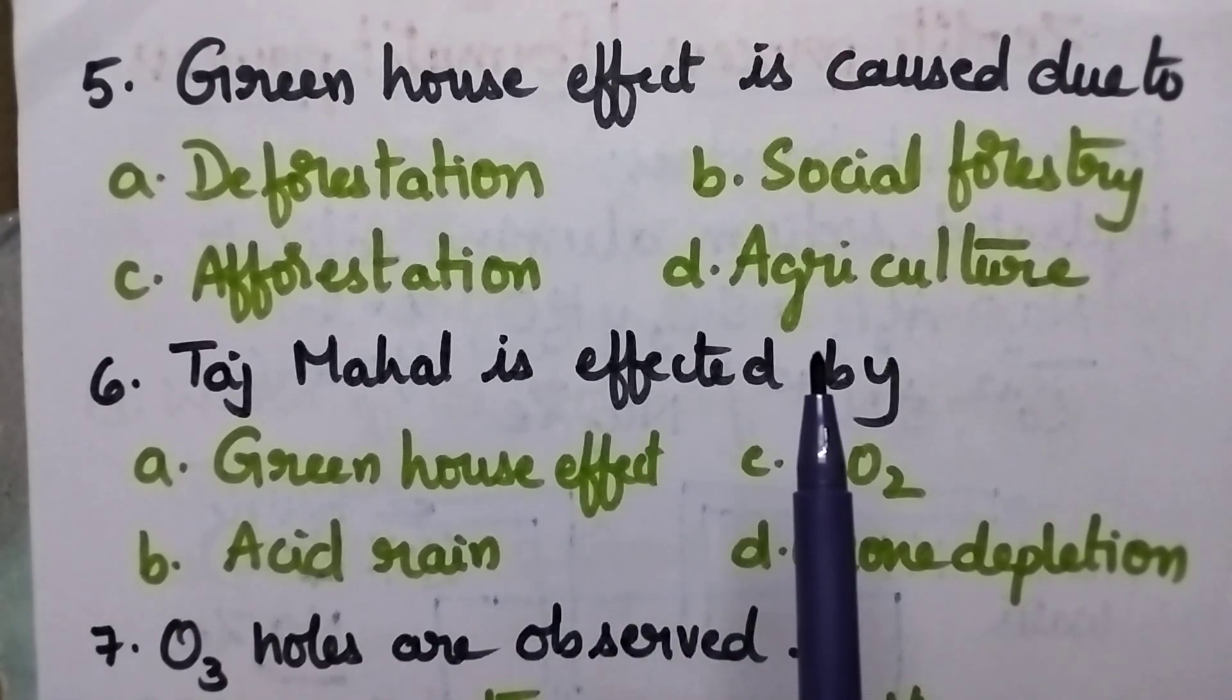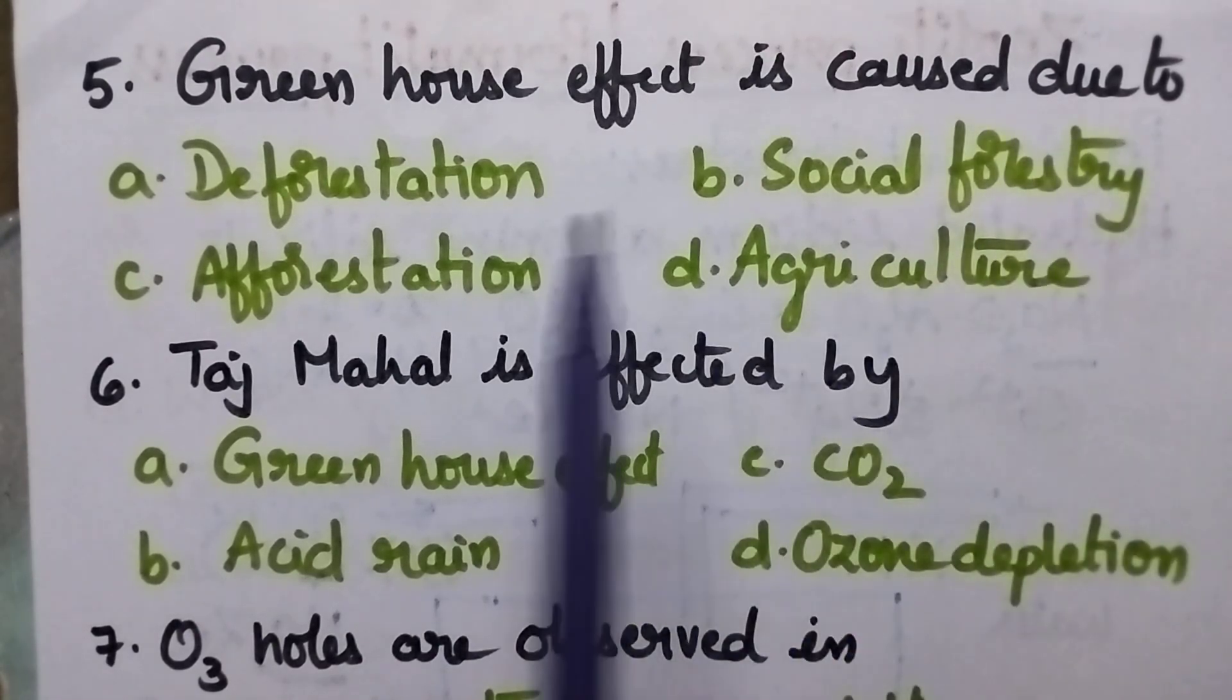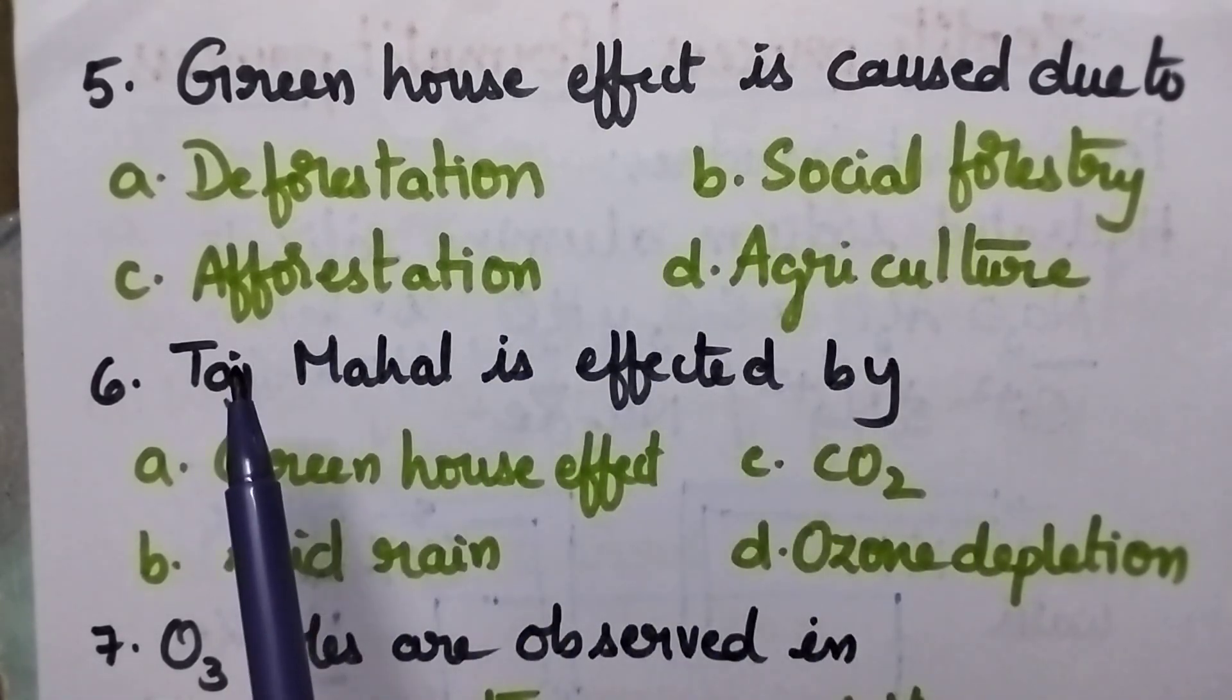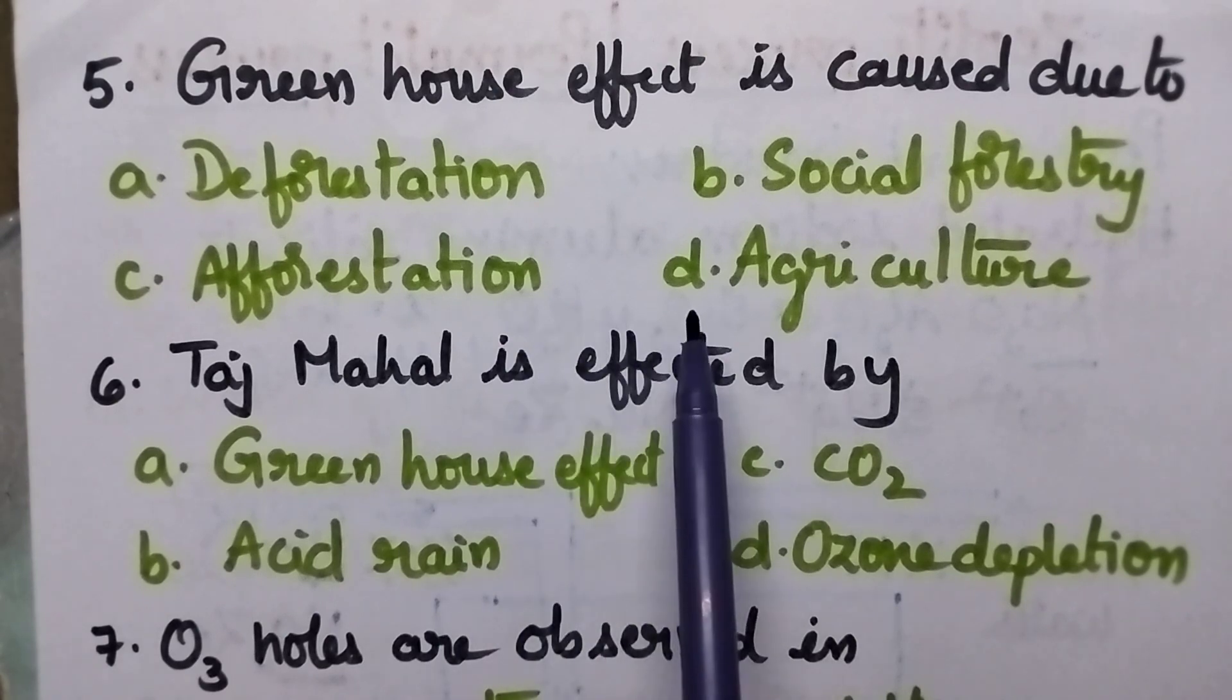Greenhouse effect is caused due to A: Deforestation, B: Social forestry, C: Afforestation, D: Agriculture.